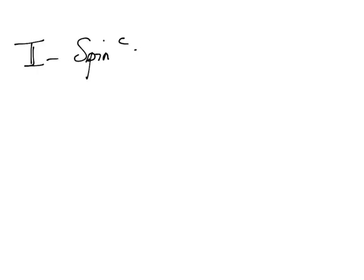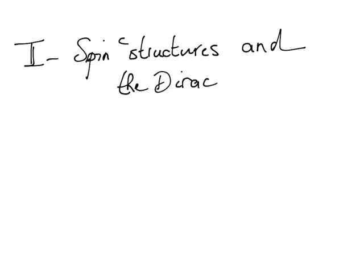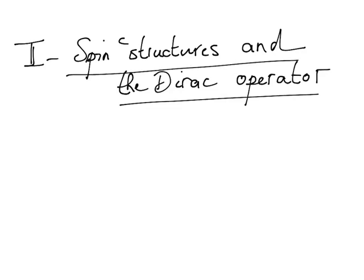Good morning everyone. Today we are going to continue with the second part of my mini-course on spin-C structures and geometric applications. If you remember what we said yesterday, we defined the Dirac operator on R^n as the square root of the Laplacian using the Pauli matrices. Today we are going to define the spin-C structure and the Dirac operator on manifolds. What we did yesterday was local; now I am trying to define something globally.